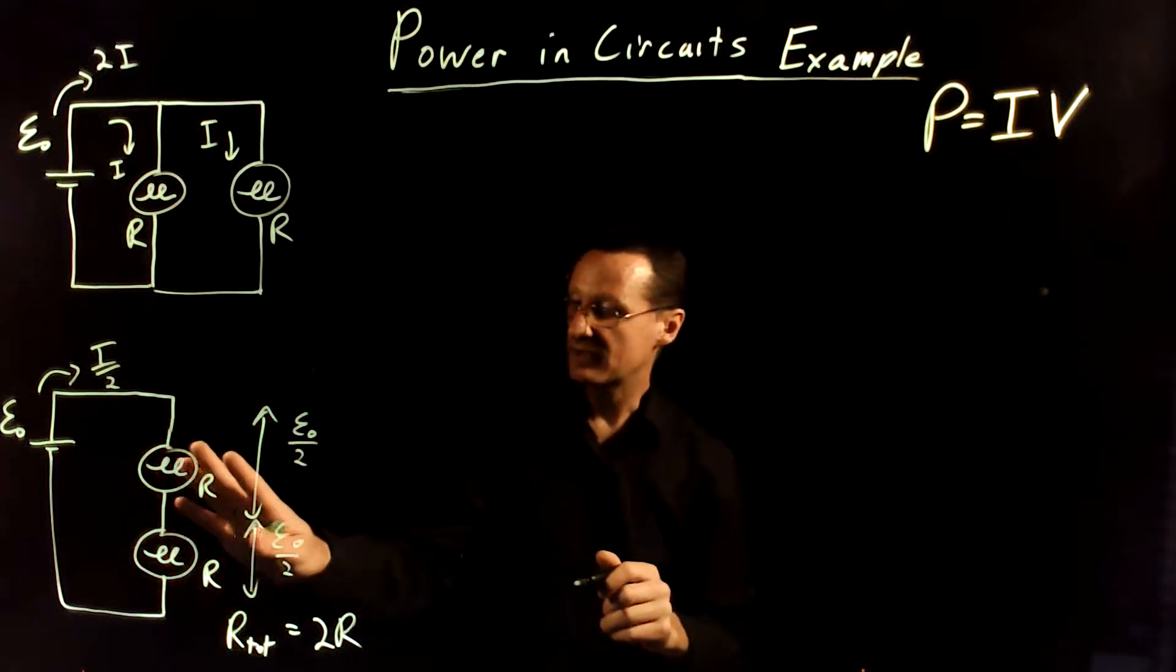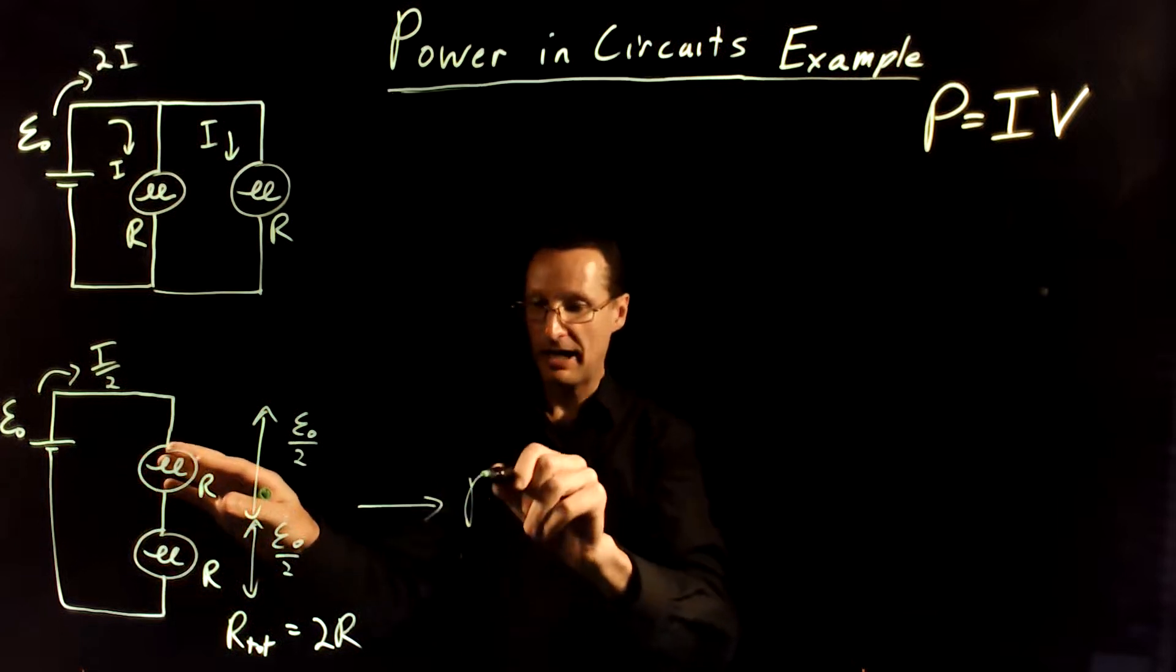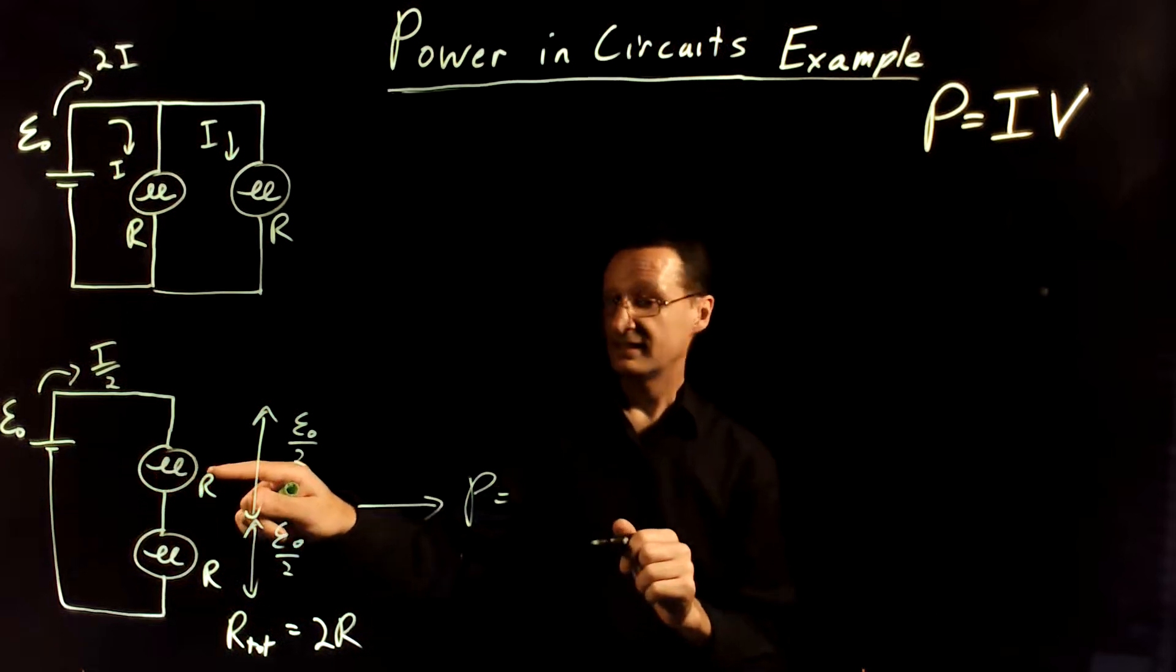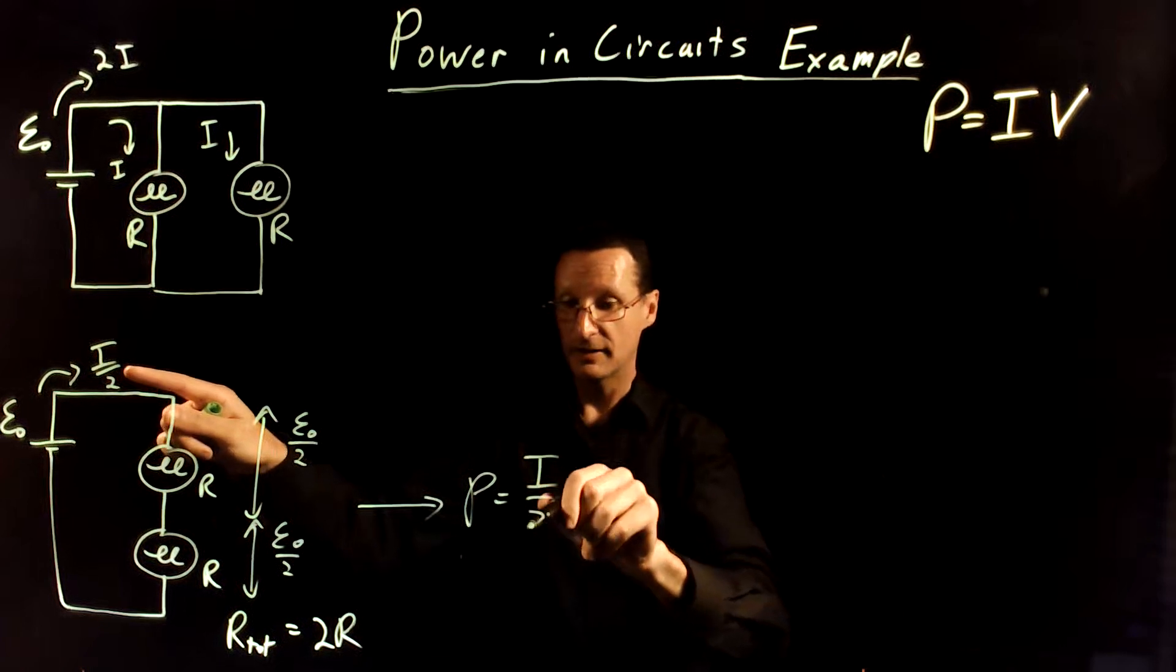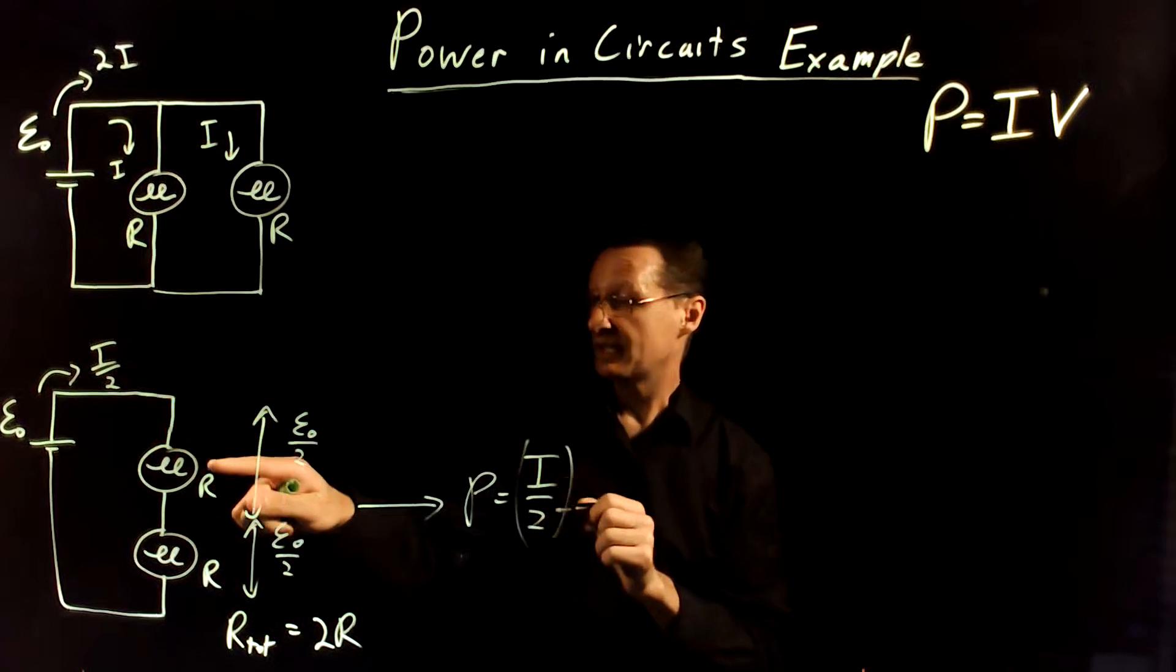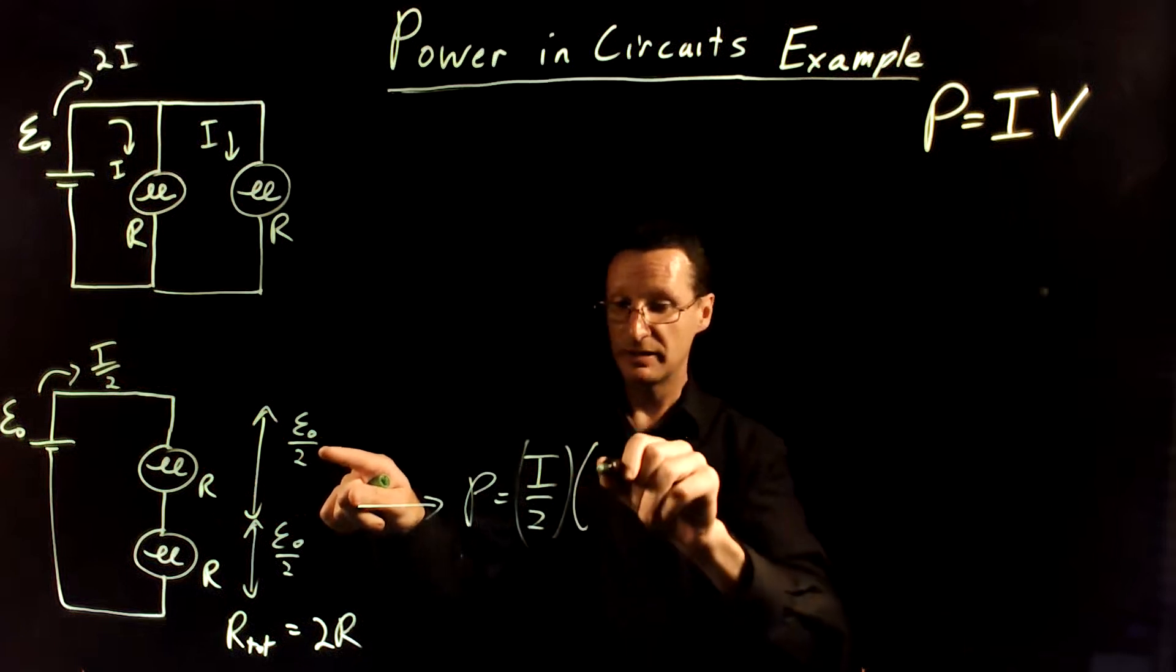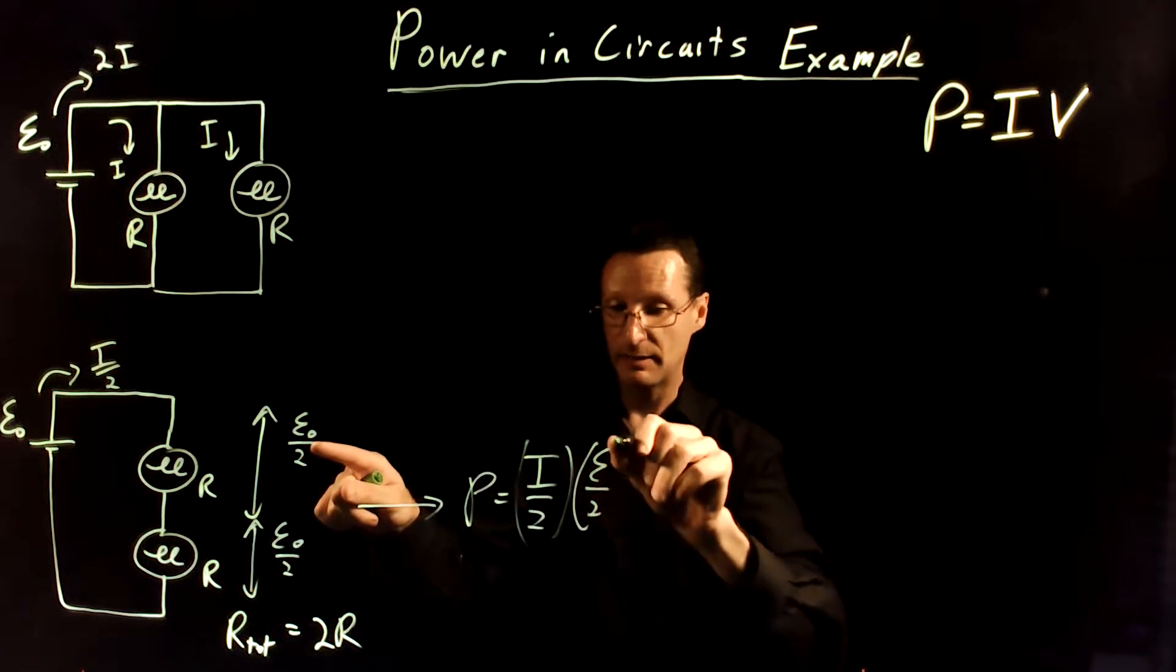So, when we compare these two, this one will have a power dissipated that is, the current is half of the current up here, and the voltage drop is going to be half of the voltage drop as well.